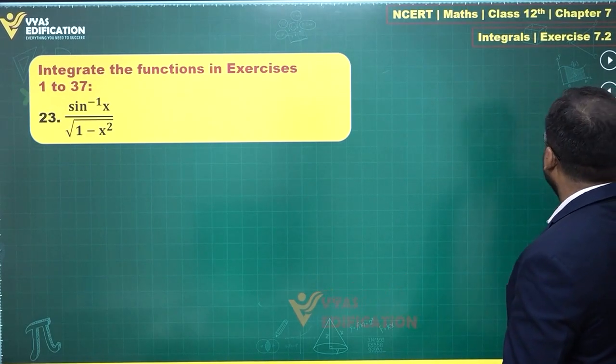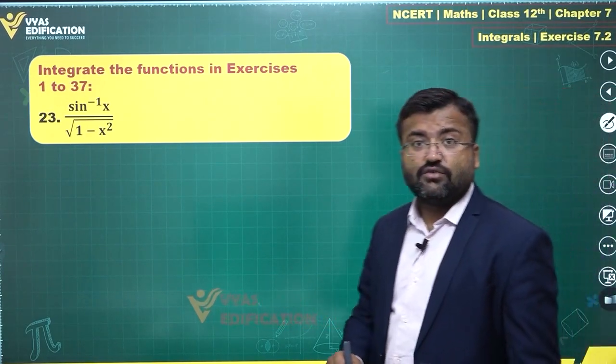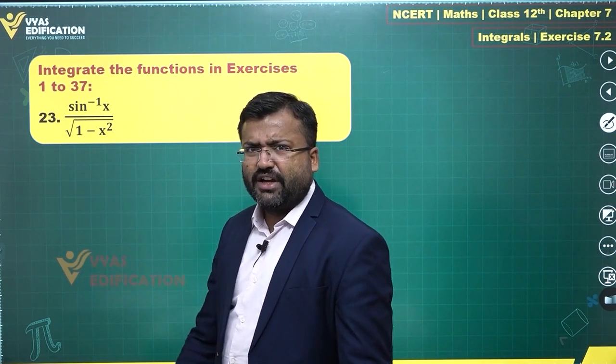In this question we have sine inverse x upon root of 1 minus x square. If you observe, both the things are pretty complicated.